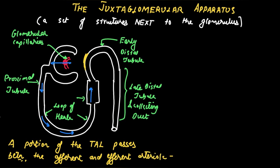Here there is a thickened spot — a dense spot — which is known as the macula densa. The macula densa senses the amount of NaCl delivered to this part of the nephron, and adjusts the tone of the afferent arteriole. When NaCl delivery increases, it constricts the afferent arteriole; when NaCl delivery decreases, it dilates the afferent arteriole.